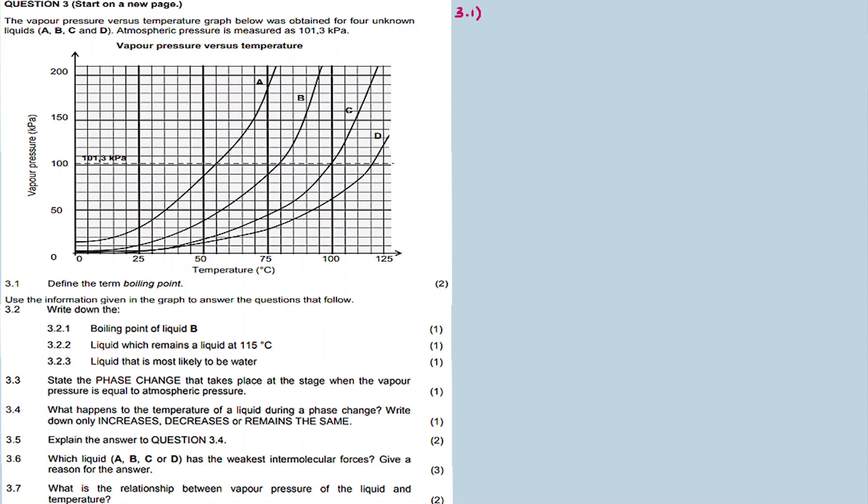Question 3.1: Define the term boiling point. The boiling point is defined as the temperature at which the vapor pressure equals the atmospheric pressure. This point is where the vapor pressure is equal to the atmospheric pressure, which makes it 100 degrees Celsius.